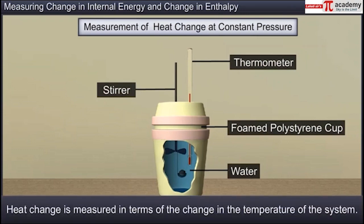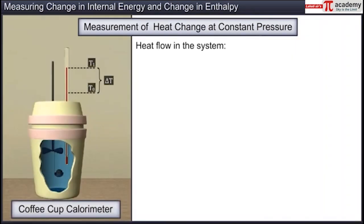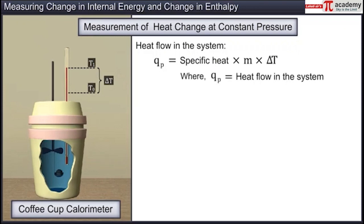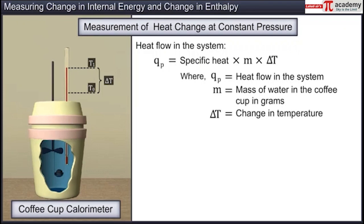When a reaction occurs in the coffee cup calorimeter, the heat change is measured in terms of the change in temperature of the system. Heat flow in the system is calculated using the relation QP = specific heat × M × delta T, where QP is the heat flow, M is the mass of water in the coffee cup in grams, and delta T is the change in temperature.